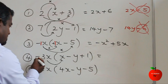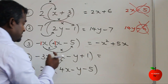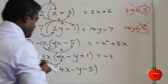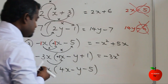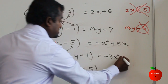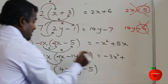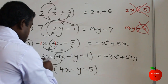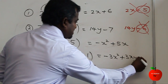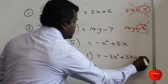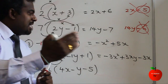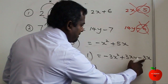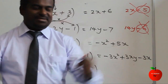Question five: sign first — minus times plus is minus. Number: 3 times 1 is 3. Letter: x times x is x squared. Next term: minus times minus is plus, 3 times 1 is 3, x times y is XY. Next: minus times plus is minus, 3 times 1 is 3, letter x. Sign, number, letter — repeat that process each time.